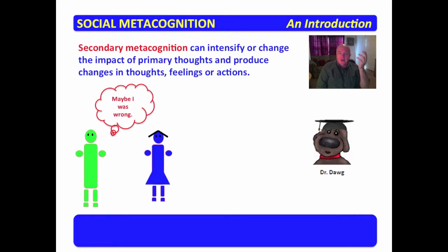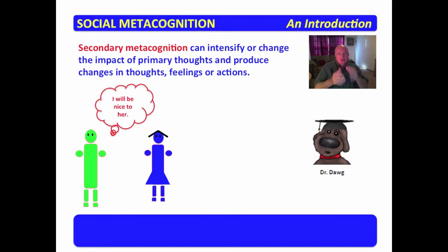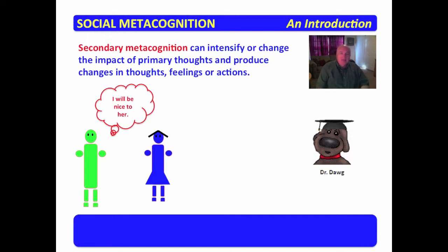Maybe I was wrong — that's secondary metacognition. Actually, she's a nice person — more secondary metacognition — and I will be nice to her. So in that flow of secondary metacognition, a chain of thought and reflection brought about a change in behavior. First he disliked her, then he began to question why, decided maybe she was a nice person, and then decided to be nice to her. Behavior changed as a result of the impact of secondary metacognition.